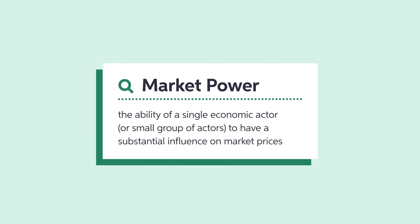Unlike firms in perfect competition, monopolists have market power — the ability to single-handedly affect market prices. If they are the only producer on the market, they can set nearly any price they want and that becomes the market price. What price are they going to pick?